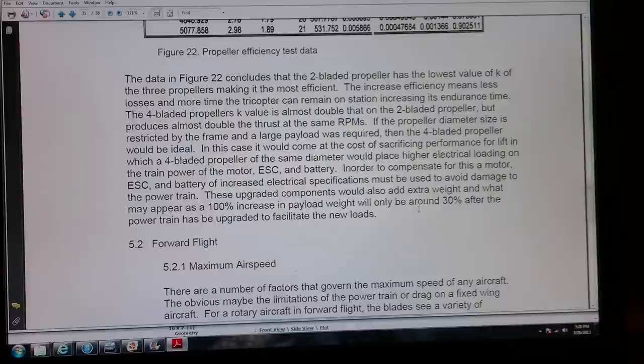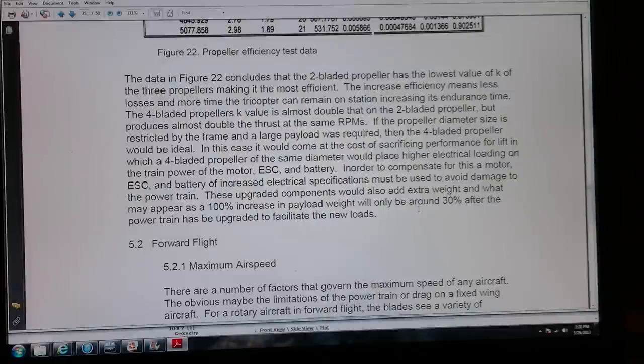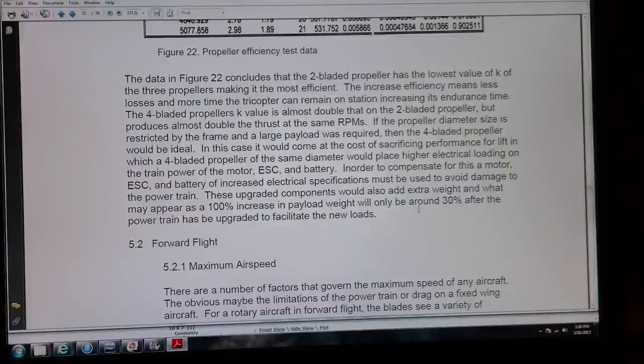Increased efficiency means less losses, more time the tricopter can remain on station, increasing loiter time. The four-bladed had K values almost double that at 2, but produced almost double the thrust for the given RPM. So if you're in one of those crazy competitions like the Hobby King Bear Lift, you'd probably want to go with the four-bladed propeller. But in this case, I decided to go with the two-bladed propeller.